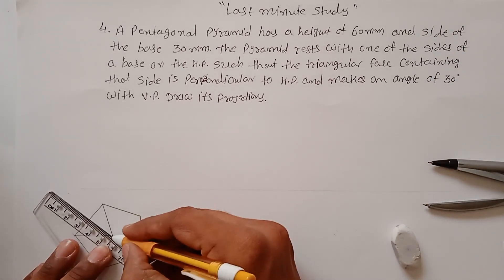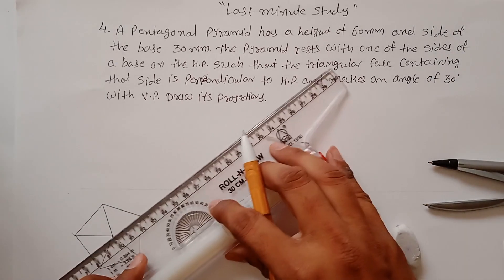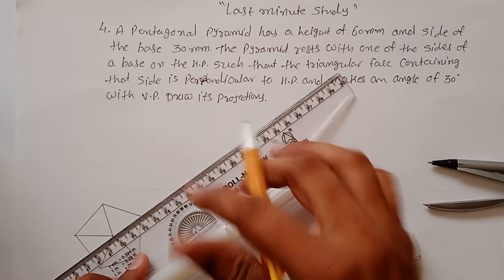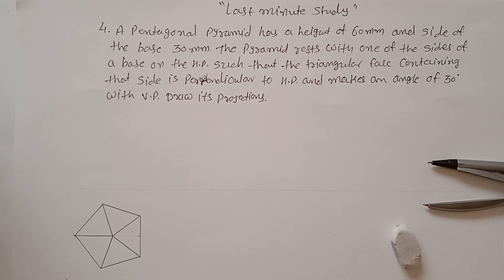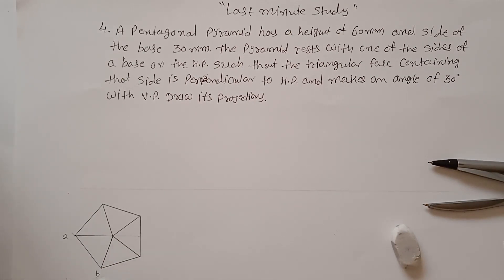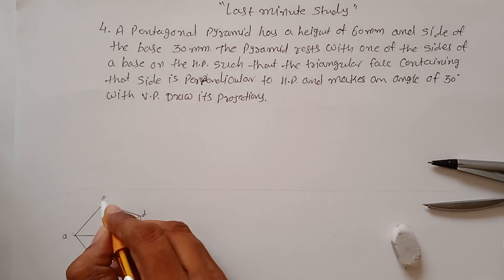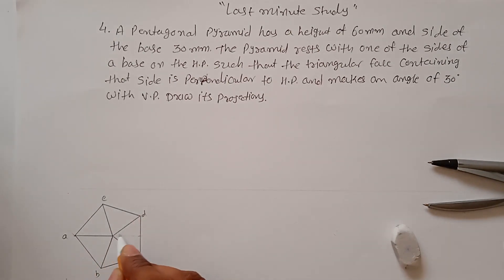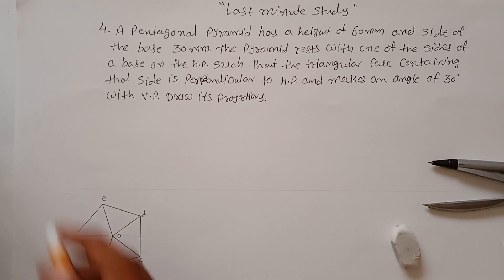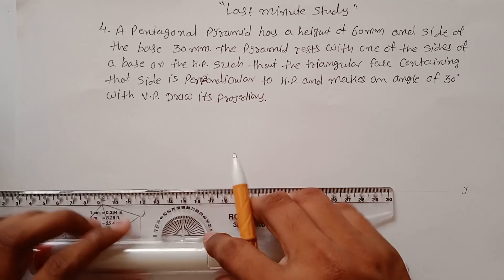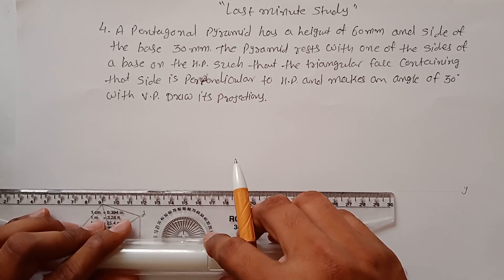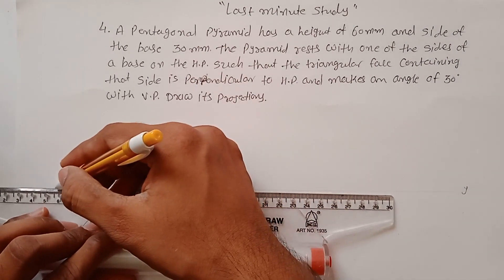Join it with all the corners. This corner is A, B, C, D, and E, and this point is O because it is the apex point. Now transfer all the points on the XY line to draw the front view of your pyramid.